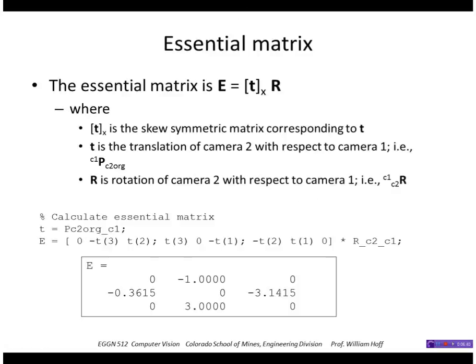So now the essential matrix, remember, was this T times R, where T is the skew symmetric matrix corresponding to T. So I can create that if I know the translation and rotation, which I do, by just multiplying the skew symmetric matrix corresponding to T times the rotation from C2 to C1. So this is my essential matrix for this scene between those two cameras.